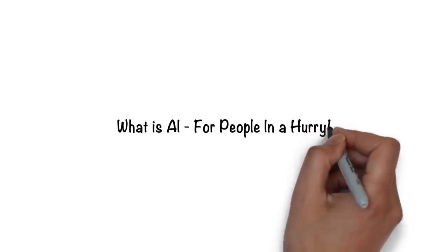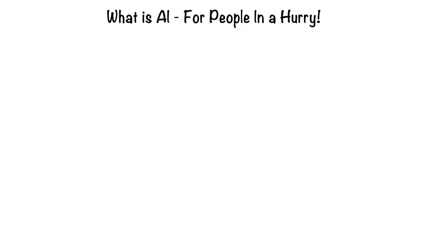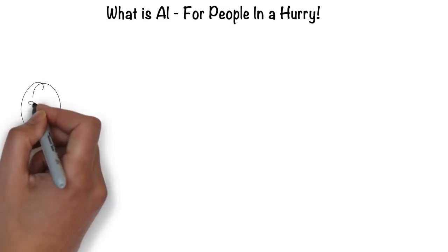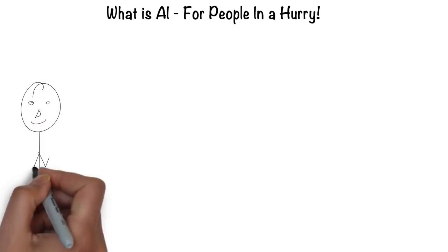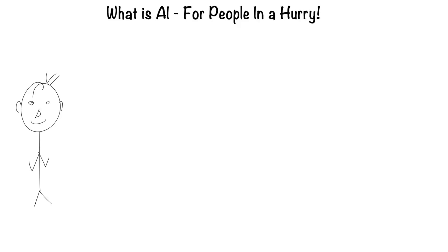Artificial intelligence for people in a hurry. The easiest way to think about artificial intelligence is in the context of a human. After all, humans are the most intelligent creatures we know of.